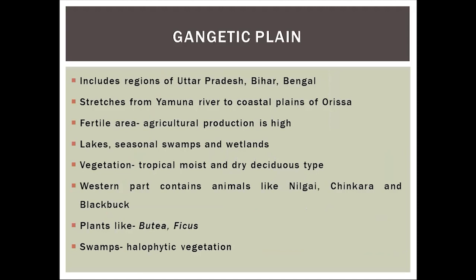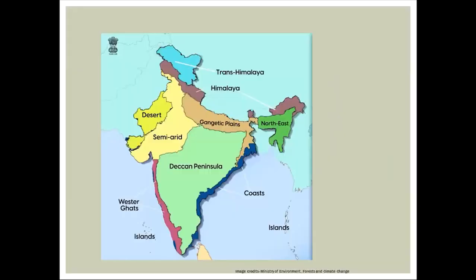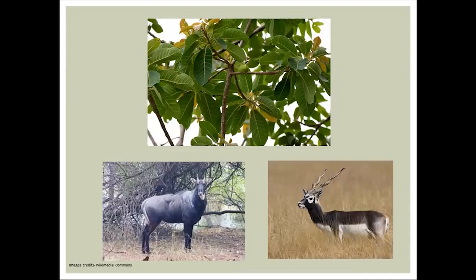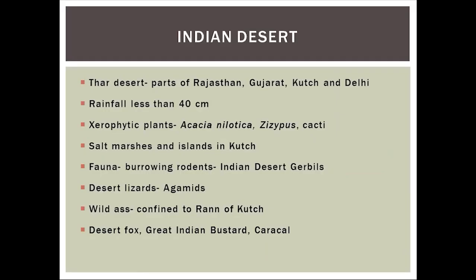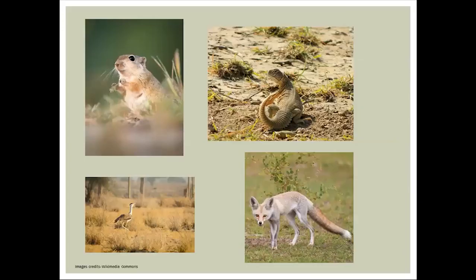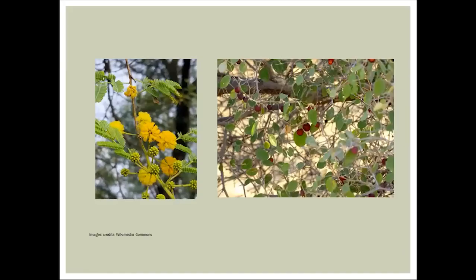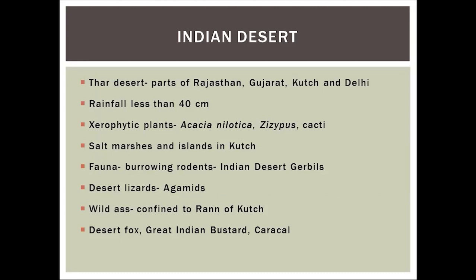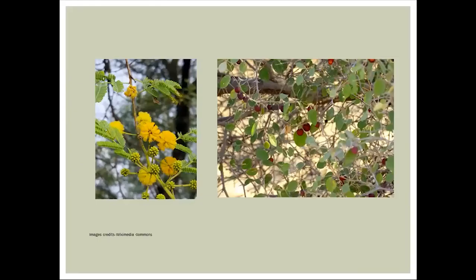The Gangetic Plain stretches from river Yamuna to the coastal plains of Odisha — remember the Mahua plant and Nilgai. The Indian Desert is in the western part of the country, spreading across Rajasthan and Gujarat. Remember the spiny-tailed lizard and Great Indian Bustard as characteristic species, and plants like Acacia nilotica and Ziziphus, called Ber.